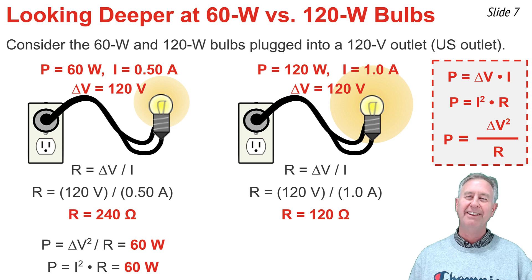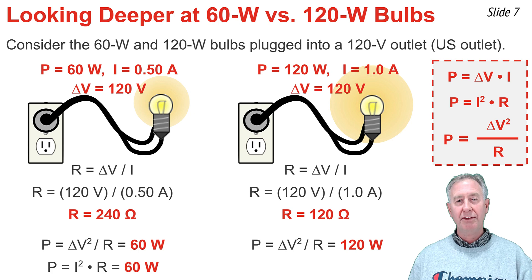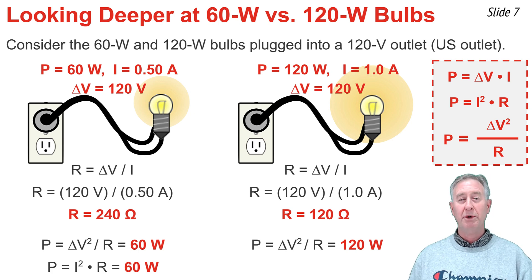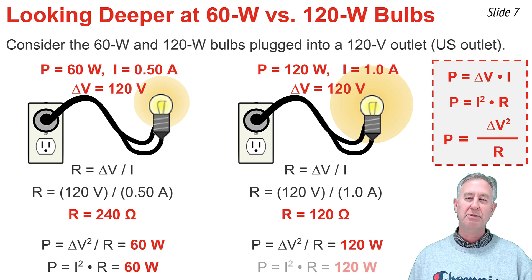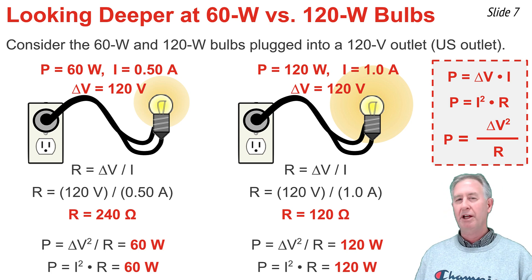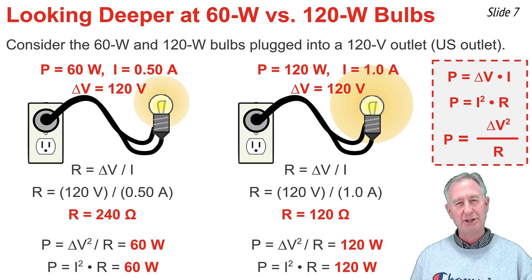For the 120-watt bulb, delta V squared over R is 120 squared divided by 120, which comes out to be 120 watts, just as expected. And using P equal I squared times R — 1 squared multiplied by 120 — that also gives 120 watts. So the equations work.